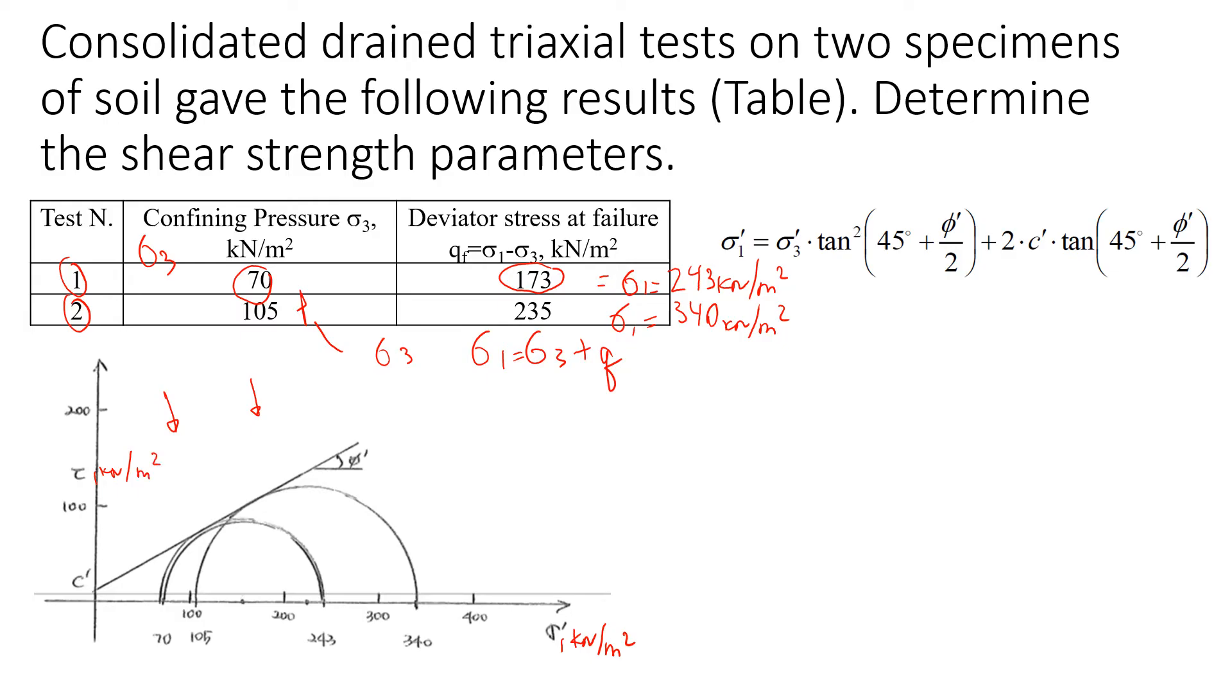For the first circle, sigma 3 is here at 70, and sigma 1 will be here which is 243. Then we use a drawing compass and we draw a circle. We'll do the same procedure for the second test. I will have sigma 3 which is 105 kilonewtons per square meters, and sigma 1 will be 340.